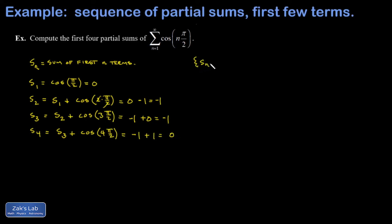So I can say the sequence of partial sums begins this way: zero, negative one, negative one, zero, and so on. Now I think it's clear just from this start that the sequence of partial sums is not going to converge. We're just going to keep bouncing between zero and negative one.